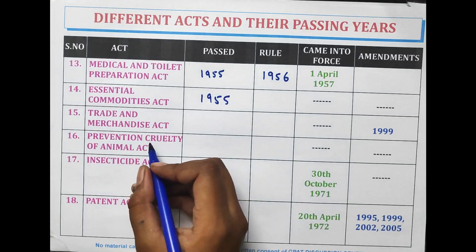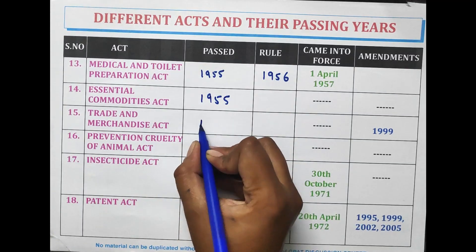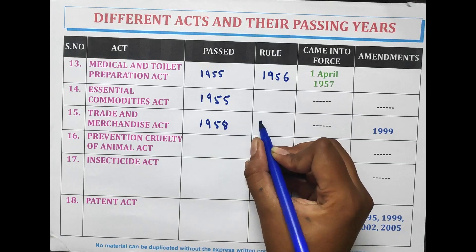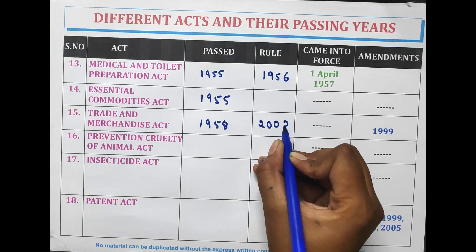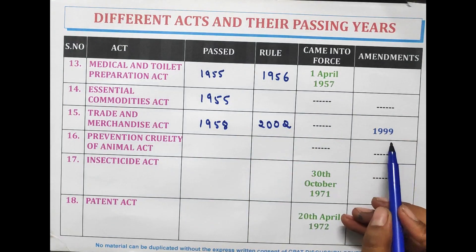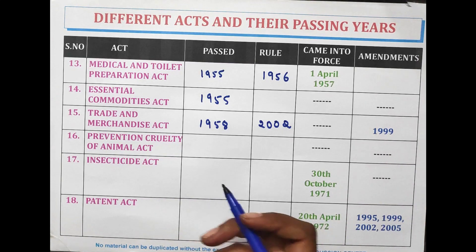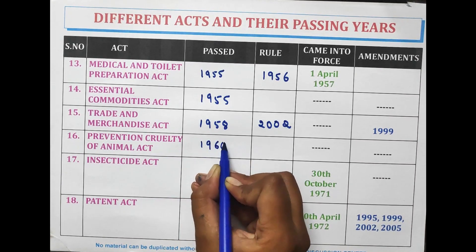The Trade and Merchandise Act was passed in the year 1958 and the rules in 2002. Amendments were made in 1999. The Prevention of Cruelty to Animal Act was passed in 1960.